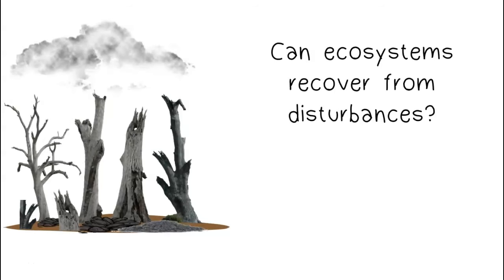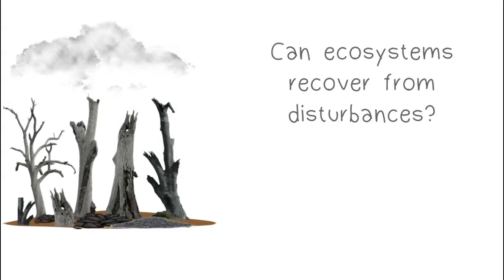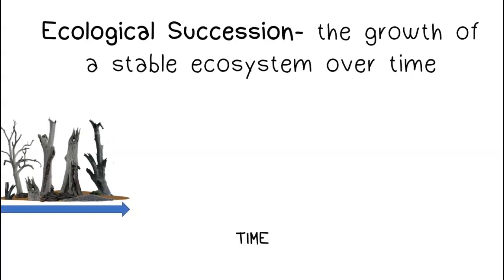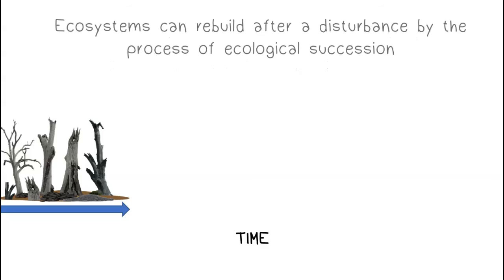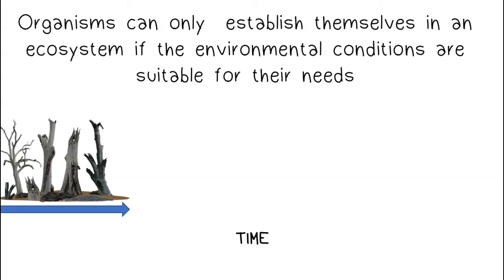Can ecosystems recover from disturbances? Ecological succession describes the growth of a stable ecosystem over time. Ecosystems can rebuild after a disturbance by the process of ecological succession. Organisms can only establish themselves in an ecosystem if the environmental conditions are suitable for their needs.